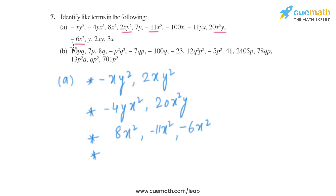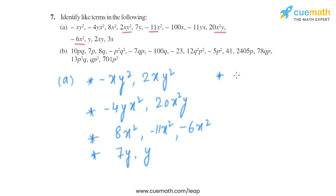Now the next term is 7Y. The variable is Y and the power is 1, so we find the like term, which is Y. So 7Y and Y are like terms.